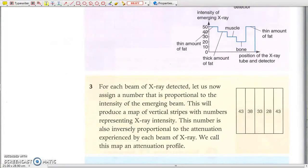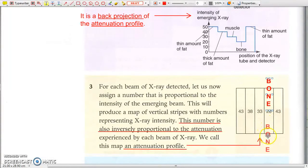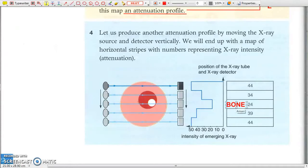The transmitted intensity variation is called a back projection of the attenuation profile, or simply an attenuation profile, as these numbers are inversely proportional to the attenuation experienced by each beam of the X-ray. We may then start to locate the high attenuation tissues, such as bone, where at which Y position the bone is located. Then the X-ray beams from a perpendicular direction may form another attenuation profile, from which we can also locate the high attenuation tissues.